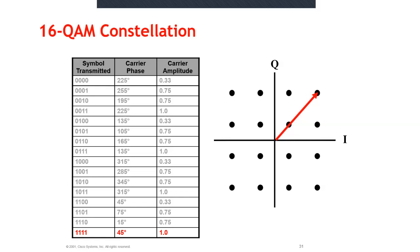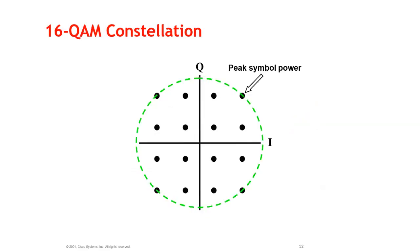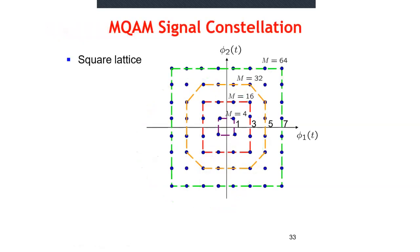This animation shows how 16-QAM works. The signal constellation has message points at peak symbol power (maximum amplitude) at the corners and lowest amplitude at the inner points. Moving from M = 4 through M = 16, 32, and 64: for M = 4 there are 4 message points; for M = 16 there are 4 message points per quadrant (4×4 = 16); for M = 32 there are 8 message points per quadrant; and for M = 64 there are 16 message points per quadrant (16×4 = 64).